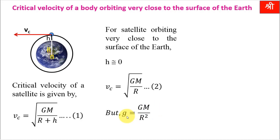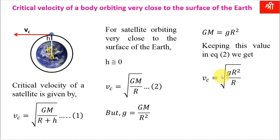We know that acceleration due to gravity very close to the surface of Earth is g = GM/R². Therefore GM = gR². Substituting this value of GM into equation 2, we get Vc = √(gR²/R). When R cancels, we get Vc = √(gR). Now g is constant at 9.8 m/s², and R is the radius of Earth, 6400 km = 6.4×10⁶ m. You can calculate the critical velocity, which is constant when the body is orbiting very close to the surface of Earth.